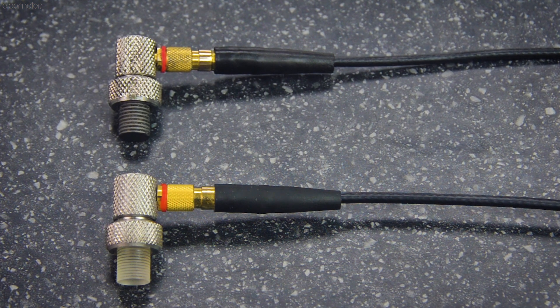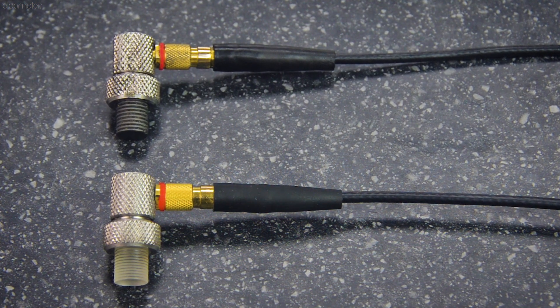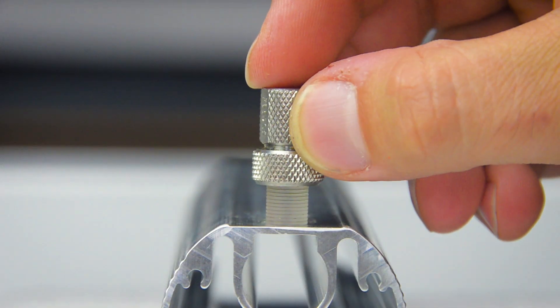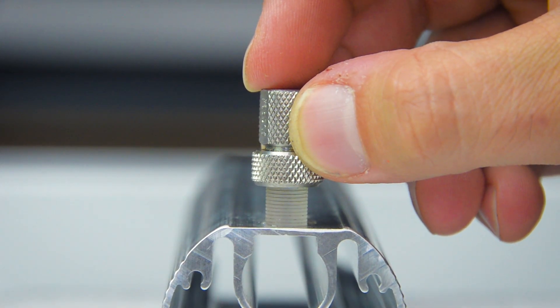The material you're measuring will affect the material of delay line you should use. For example, acrylic delay lines are suitable for measuring on steel, aluminum, and titanium.